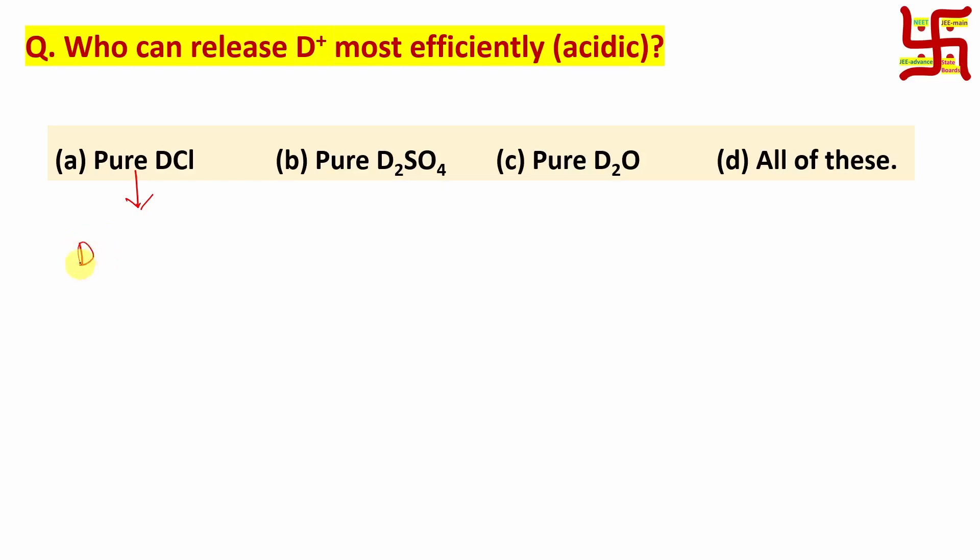If you add some polar protic solvent, you can consider D₂O. Then only this DCl shows acidity and releases deuterium - the deuterium version of proton like D+, which can act as electrophile. So pure DCl cannot act as electrophile.